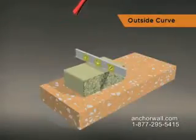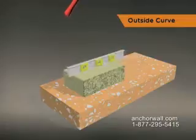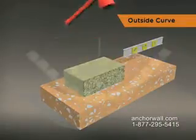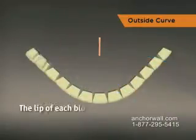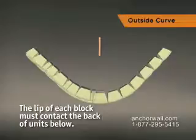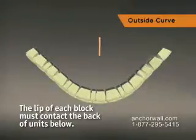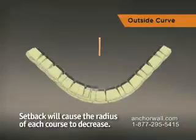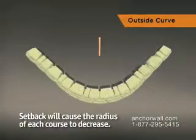Level side to side and front to back. On additional courses, the lip of each block must contact the back of the units below to ensure structural stability. Setback will cause the radius of each course to gradually decrease.